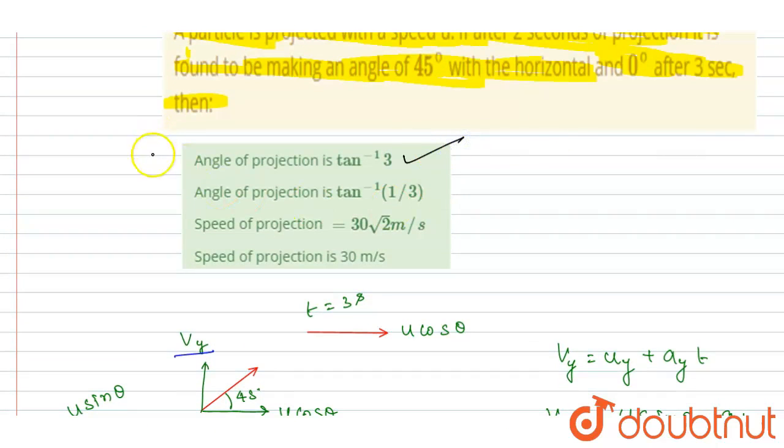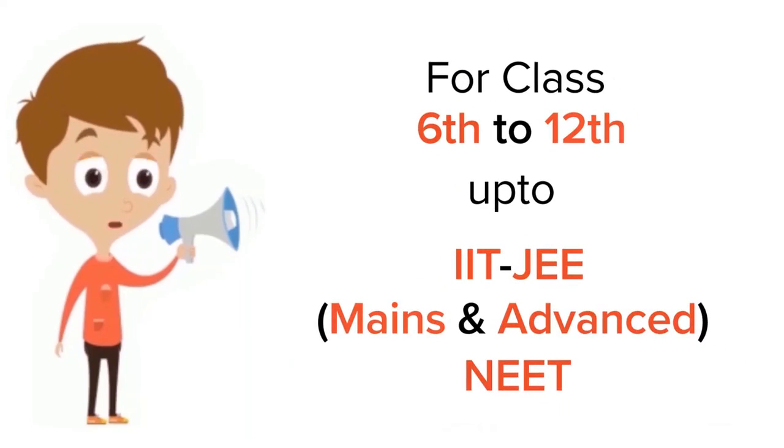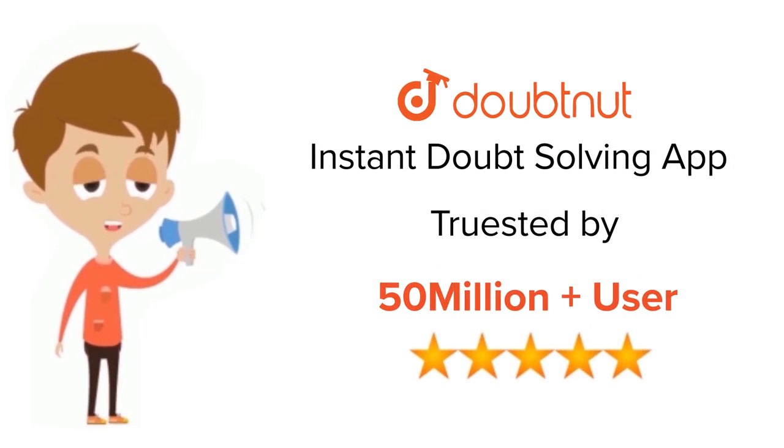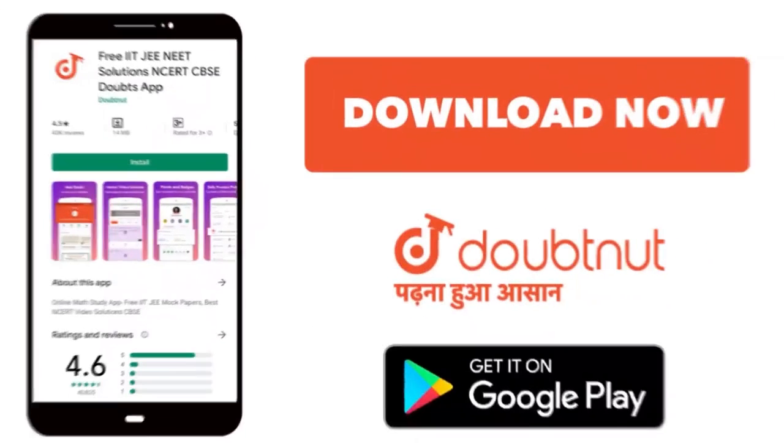Now you can check for the option. Angle of projection, this a is the correct one. Speed of the projection is 10 root 10, that is incorrect. So a is the correct option. Thank you. For class 6 to 12, IIT, JEE, and NEET level, trusted by more than 5 crore students, download Doubtnet today.